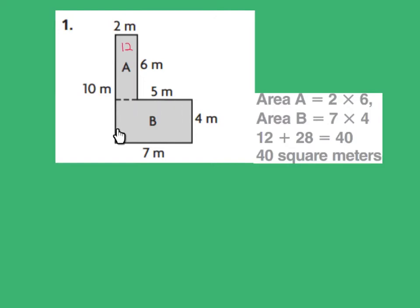Now let's take a look at rectangle B. The base is 7 meters and the height is 4 meters. Therefore, 7 times 4 would be 28 squared meters. Now all we have to do is add the combined squared meters. 12 plus 28 equals 40 squared meters.